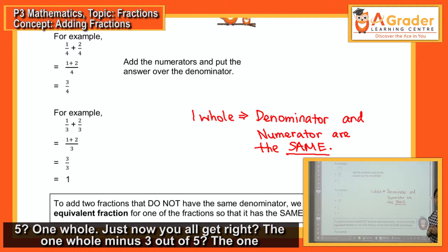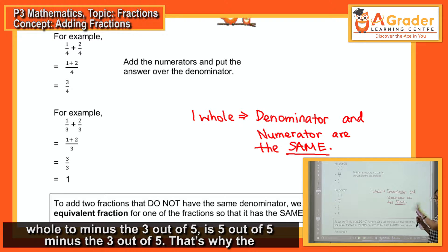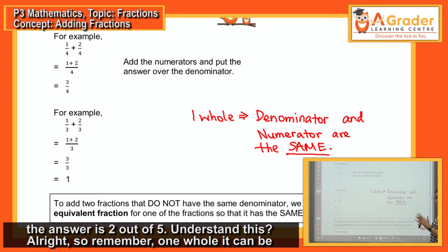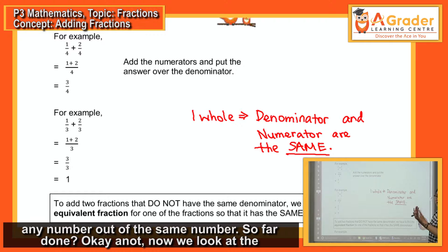How about five out of five? One whole. Remember: one whole means the numerator and denominator are the same. For example, one whole minus three out of five — the one whole becomes five out of five, so five out of five minus three out of five gives you two out of five. One whole can be any number out of the same number.